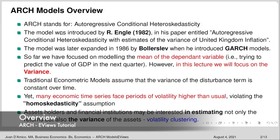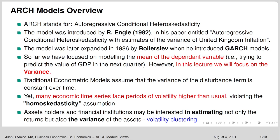Let's begin with ARCH models. ARCH stands for autoregressive conditional heteroscedasticity. This model was introduced by Engle in 1982 in his paper entitled 'Autoregressive Conditional Heteroscedasticity with Estimates of the Variance of United Kingdom Inflation.' The model was later expanded in 1986 by Bollerslev when he introduced GARCH models.